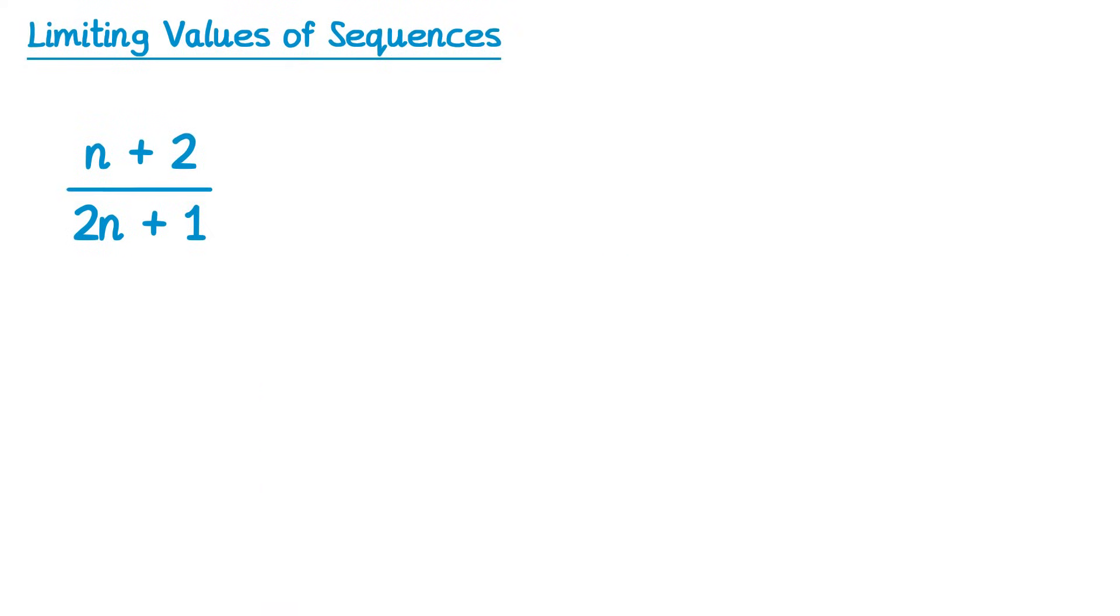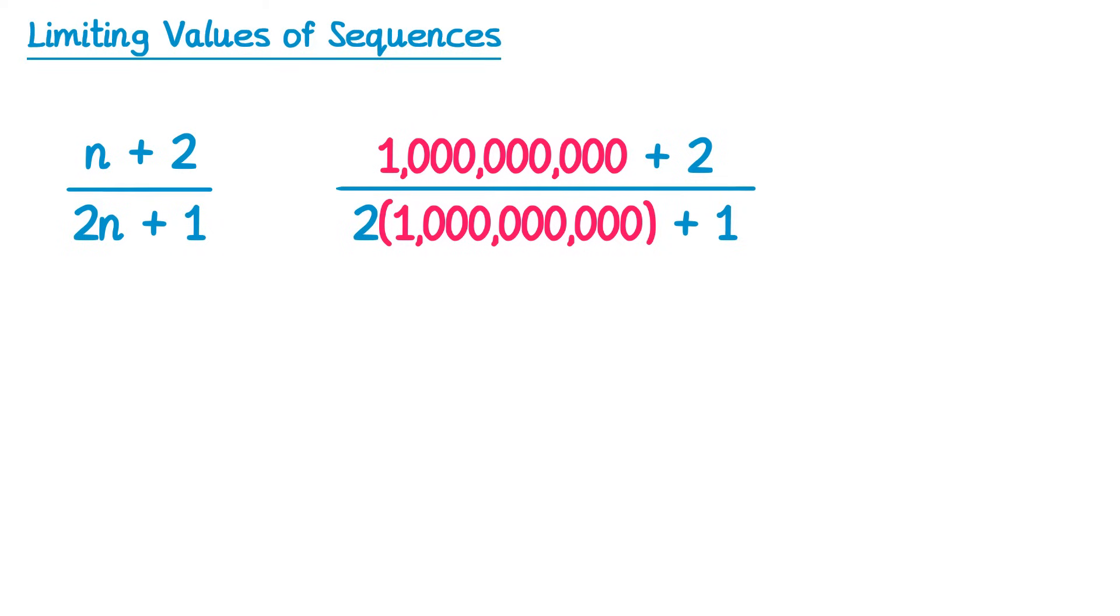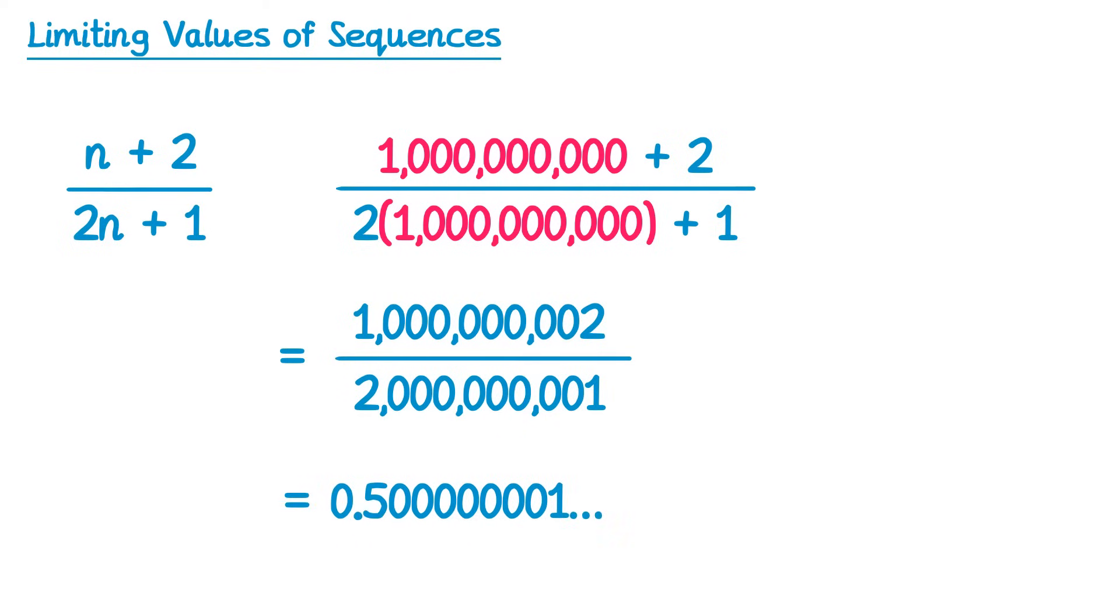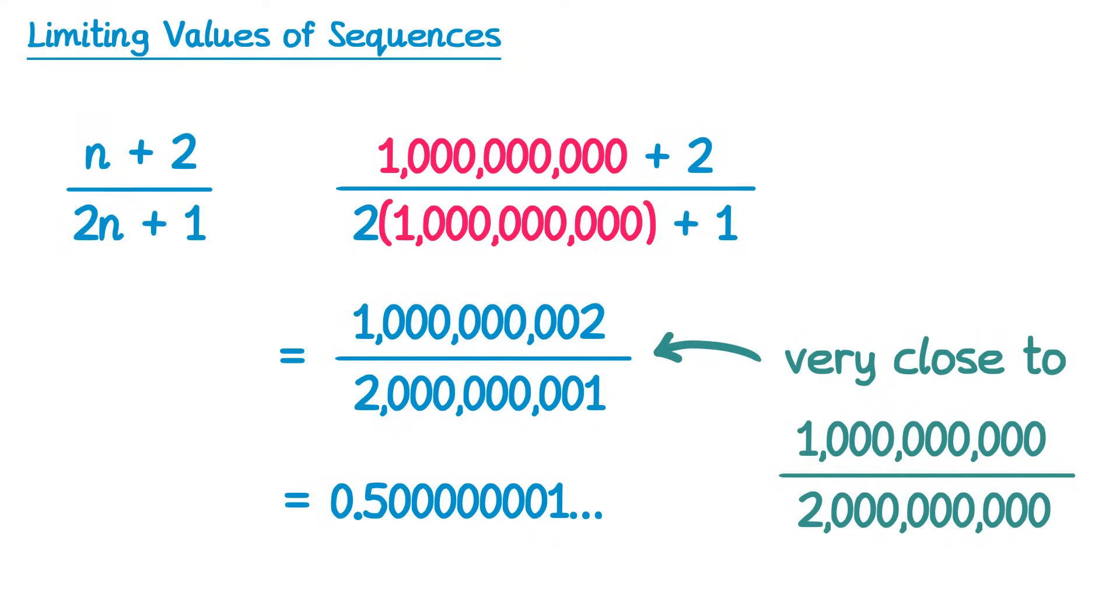There is a reason for this. When we did the billionth term, we did 1 billion add 2 divide by 2 times a billion add 1, which is 1 billion and 2 divide by 2 billion and 1, which came out as 0.5000001, so extremely close to 0.5. What we find is this fraction here is very close to 1 billion over 2 billion, which of course would equal one half.